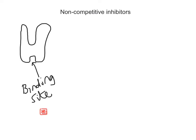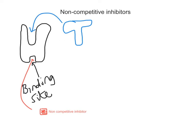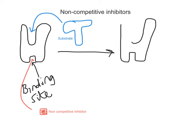That effectively means that they have denatured the enzyme. If they change the shape of the active site, the substrate molecule — which at the moment would be complementary and would fit the active site — will no longer fit if that non-competitive inhibitor binds the binding site elsewhere. You can see this change of shape of the active site.